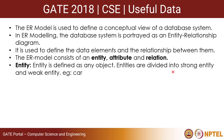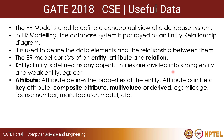An entity is defined as any object, grouped into either a strong entity which has a primary key, or a weak entity which does not have a primary key and is dependent on a strong entity — for example, a car or a student. Each entity has some properties, and attributes define those properties. An attribute can be a key attribute, which is unique to that entity set; a composite attribute, composed of different sub-attributes; a multi-valued attribute, where it can have more than one value; or a derived attribute, derivable from other attributes — for example, mileage, license number, manufacturer, or model name.